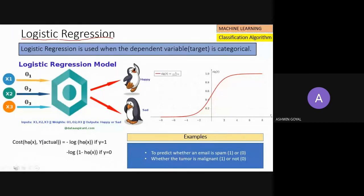Let's move to logistic regression. Logistic regression is very similar to linear regression, except that here we are not trying to predict a continuous value — we are trying to classify. For example, we want to classify whether a person is happy or sad.